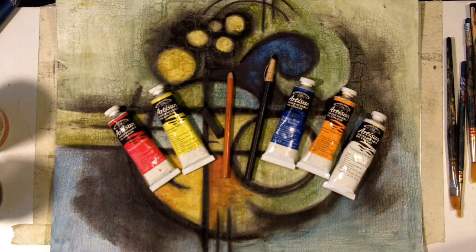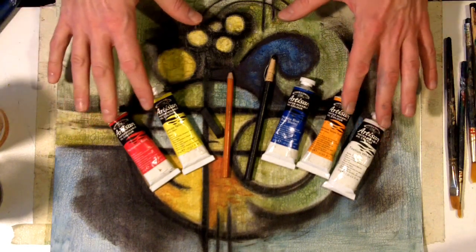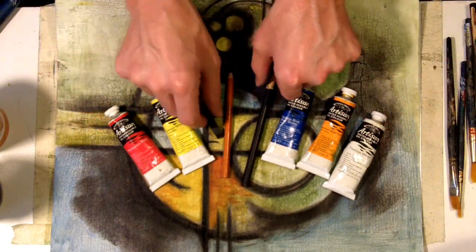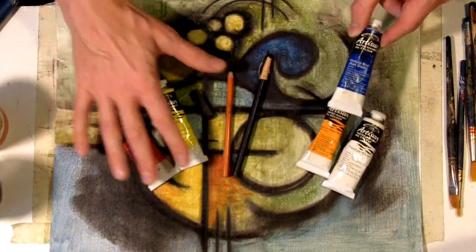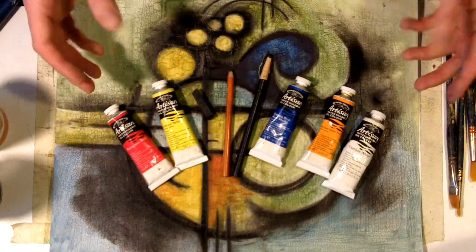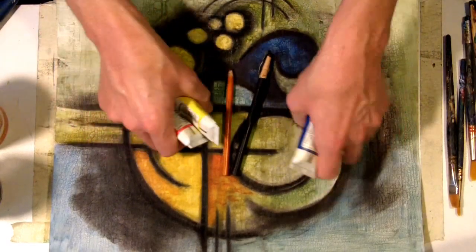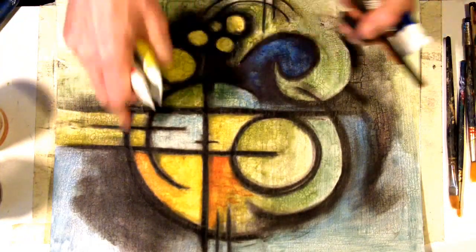All right, today we're going to learn a very simple mixed-media combination of charcoal and oil paint, more specifically oil glazes. Combining these two types of materials, you can really get some interesting, dynamic work. So here's one that's in progress.